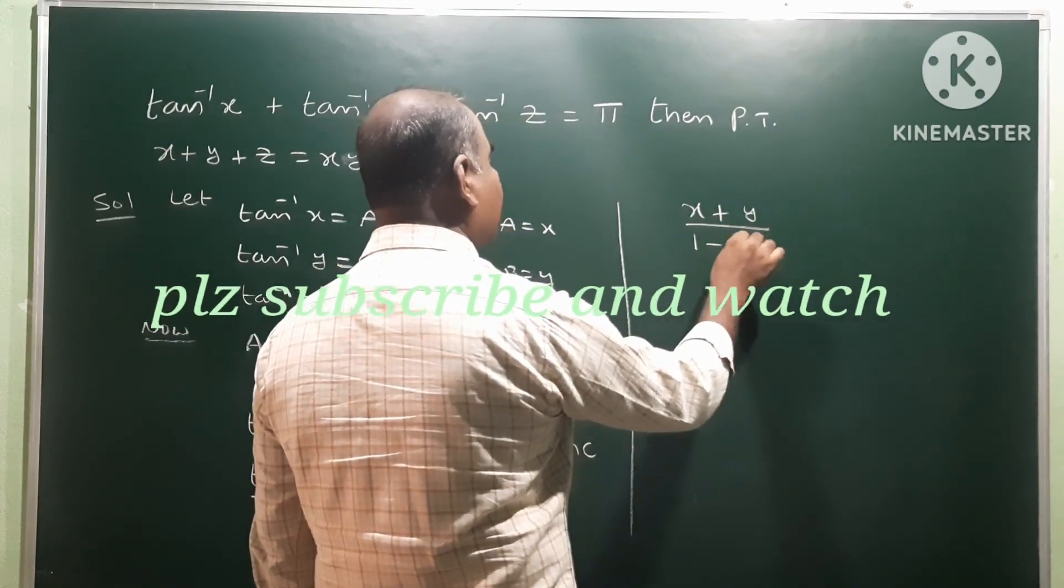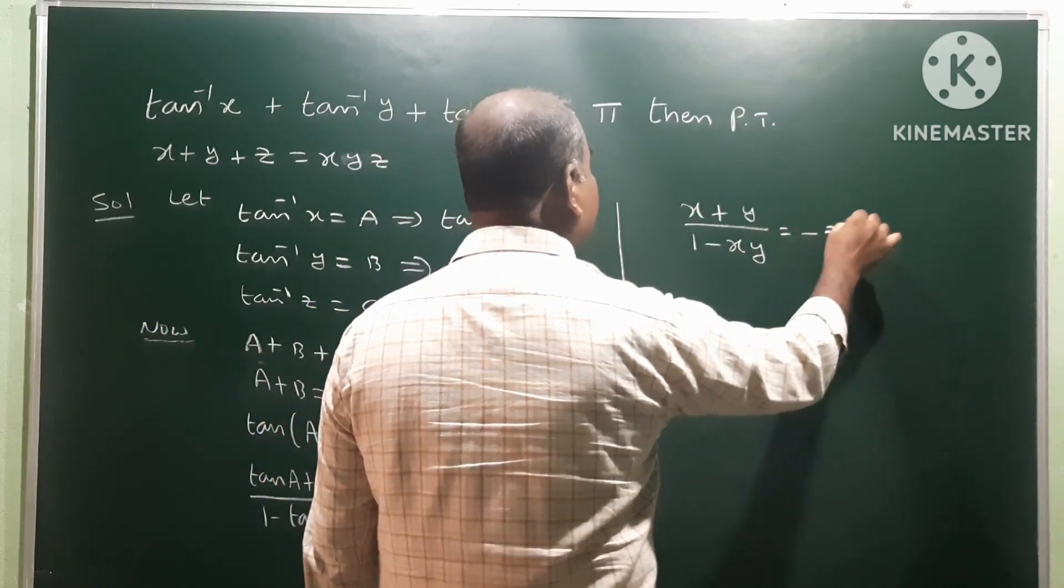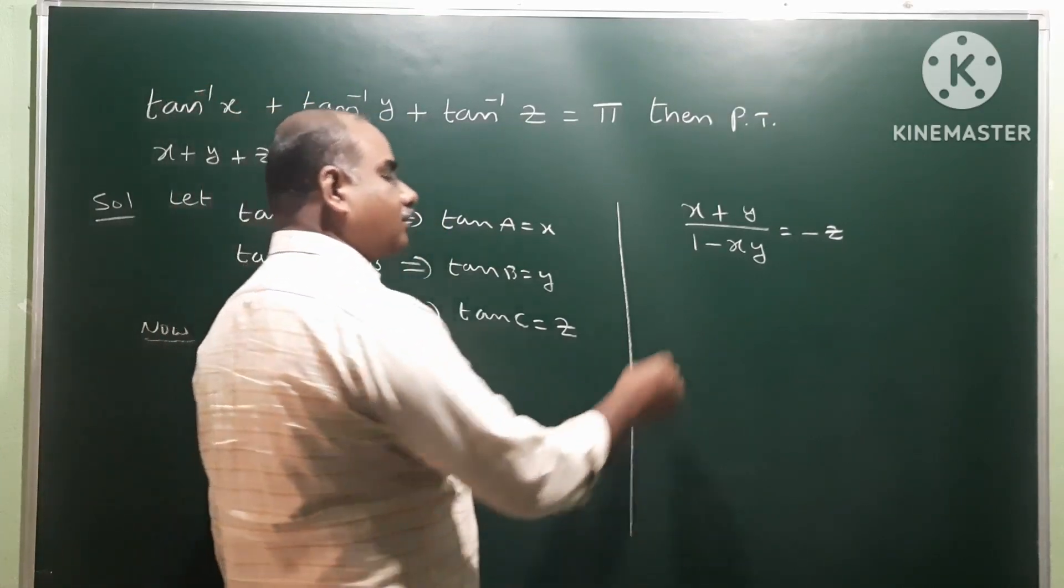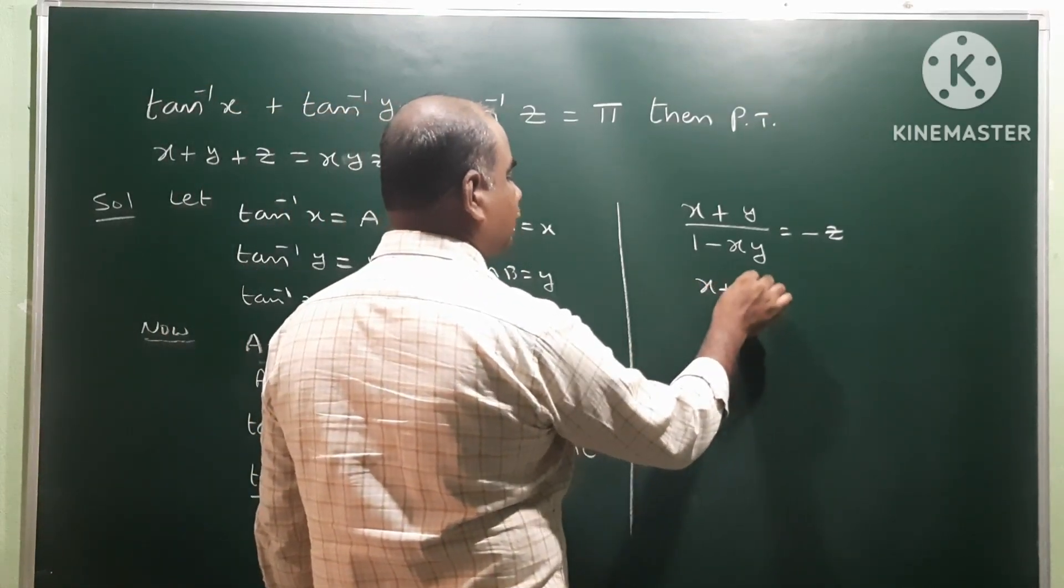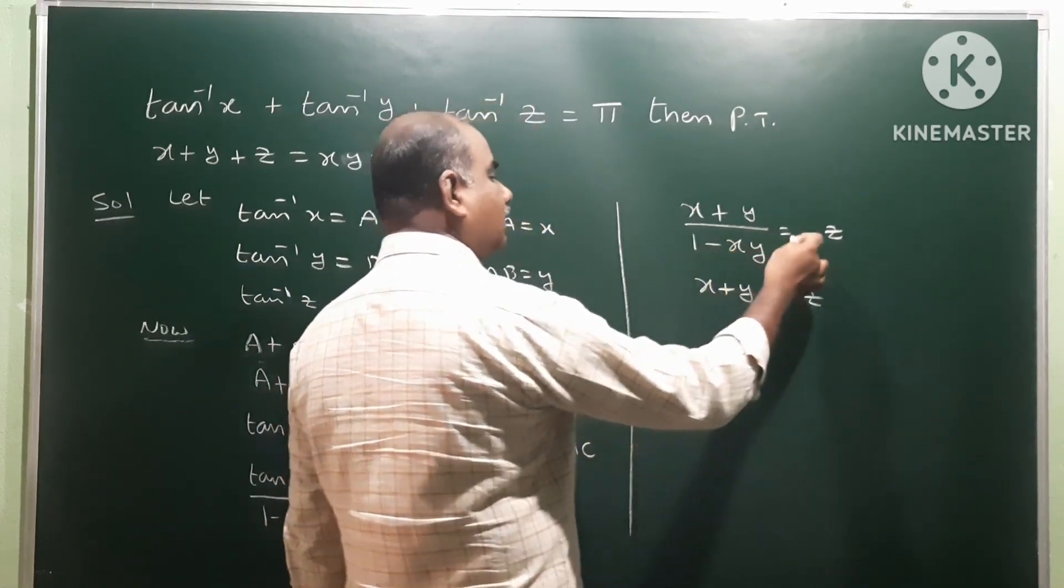1 minus tan A means x times tan B means y is equal to minus tan C, tan C means z. Now take cross multiplication. x plus y is equal to 1 into minus z, minus times minus plus, xy into z becomes xyz.